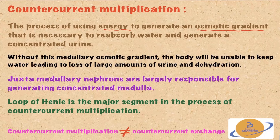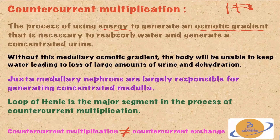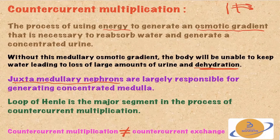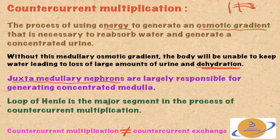The filtrate goes down the descending limb, pushes more filtrate into the ascending limb, and through active transport sodium, potassium, and chloride move out into the interstitium, creating a hyperosmolar interstitium that attracts water reabsorption. Counter-current multiplication is the process of using energy to generate an osmotic gradient necessary to reabsorb water and generate a concentrated urine. Without this medullary osmotic gradient, the body will be unable to keep water, leading to loss of large amounts of urine and dehydration.